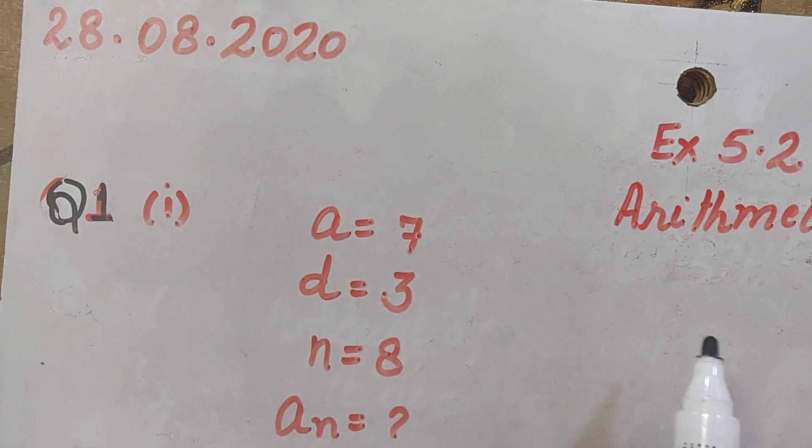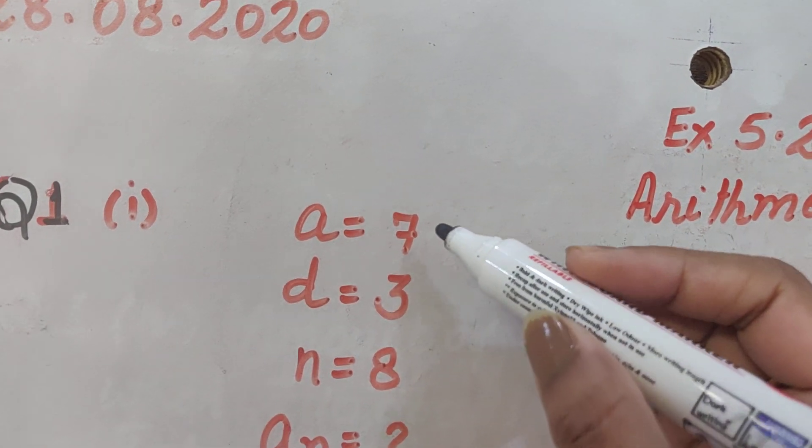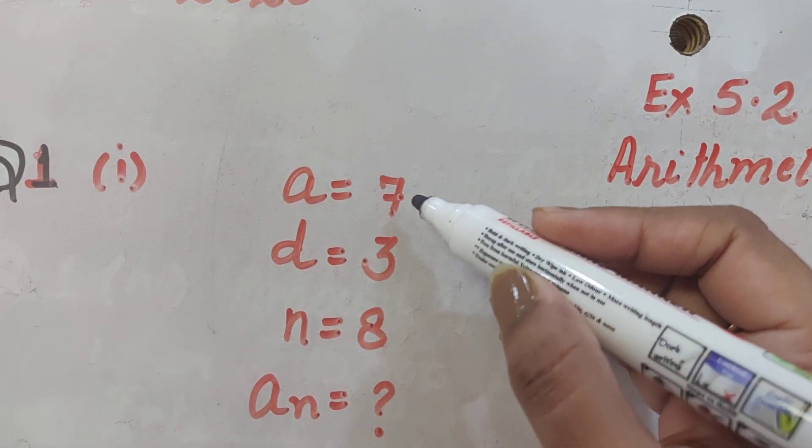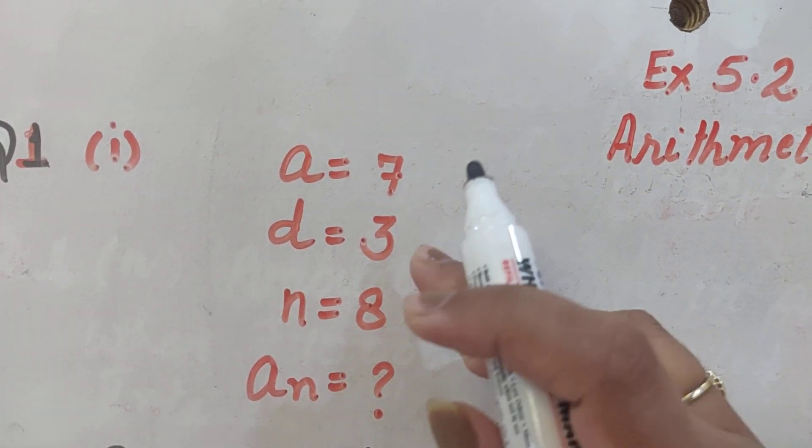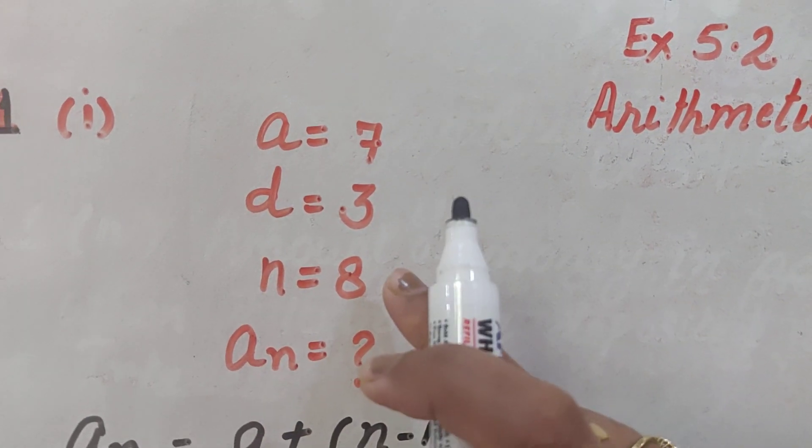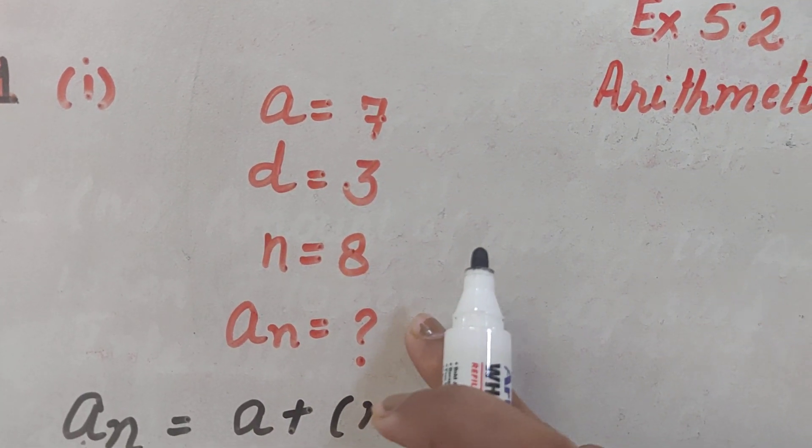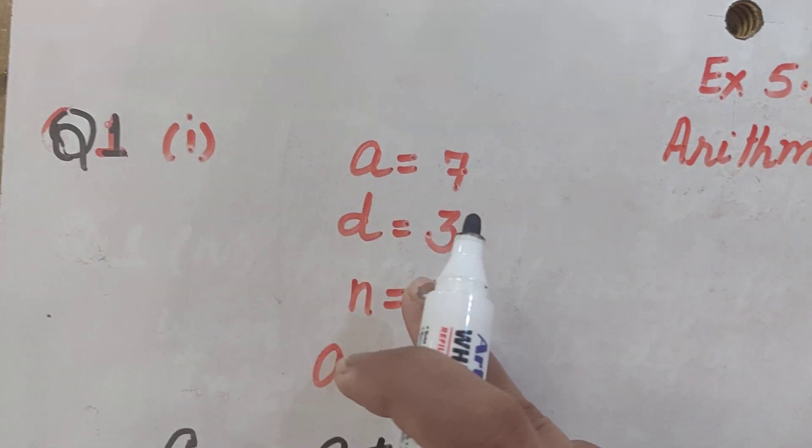Okay, in this question, first question, you have been given some certain things. You have been given A, you are given D, you are given N and you have to find AN. This is the first part of question number 1.